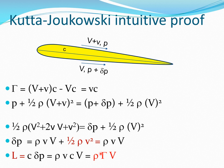The lift per unit span is the chord length times delta-p: L = c · Δp = c · ρvV = ρV(vc). Since from our earlier result gamma = v·c, we can substitute to get L = ρVΓ — the Kutta-Joukowski theorem.